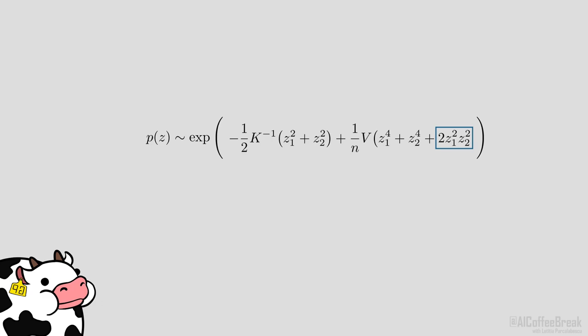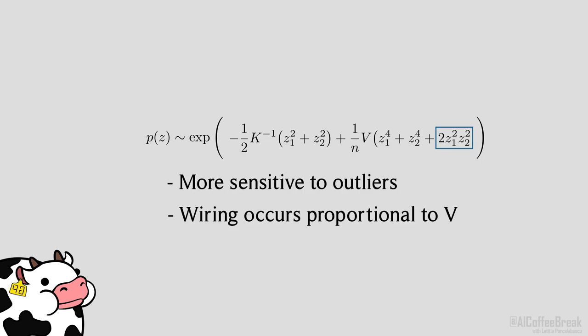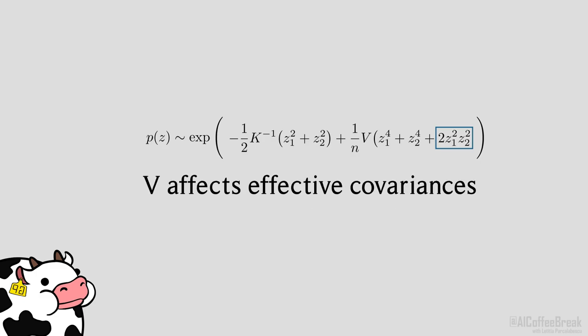We don't have the time to go full in-depth into how exactly this causes wiring and representation learning, but to give a rough explanation. The new V-term acts like an excess kurtosis term that makes the distribution more sensitive to outliers, causing a wiring effect with a strength proportional to V. And the V-term modifies the effective covariances, allowing for non-linear effects.